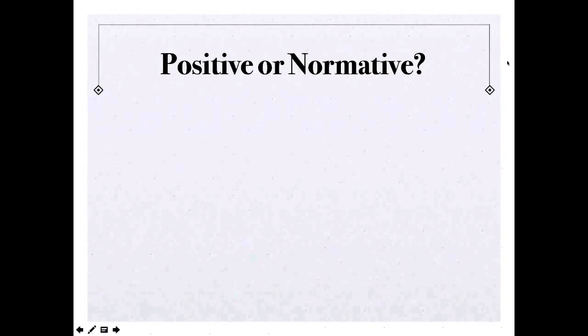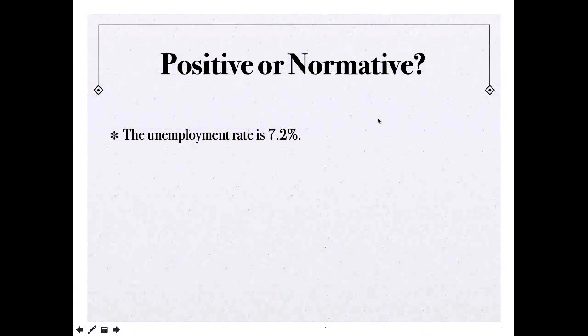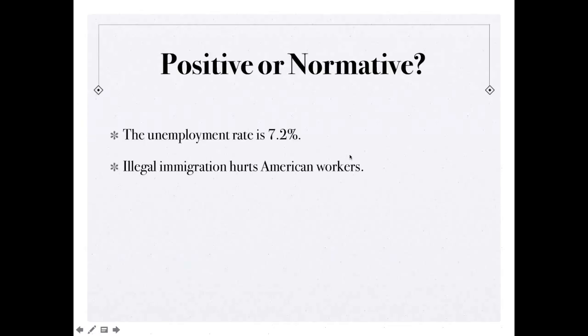I have some examples of positive and normative. The unemployment rate is 7.2%. That is a positive statement. That is a provable statement. Illegal immigration hurts American workers. That is a normative statement. In order to make that a positive statement, you would have to provide some evidence. When you make a statement, hurts, harms, without evidence, you're generally making a normative statement.